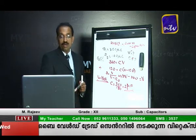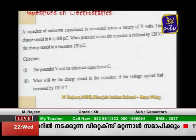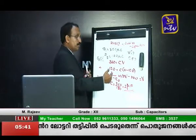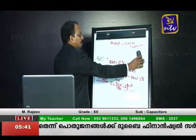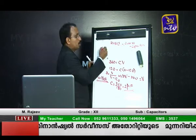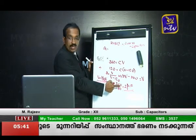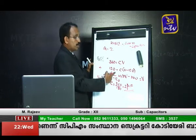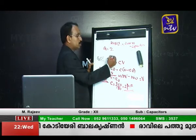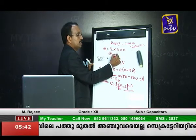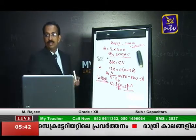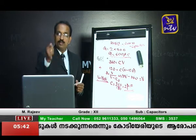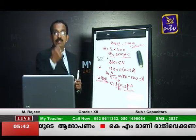The third part of the question asks: what will be the charge stored if the voltage had increased by 120 volts instead of decreased? Using Q = CV again: Q = 2 microfarads × (180 + 120) = 2 × 300 = 600 microcoulombs. We have all three answers now. You can try this question again yourself and check how well you can solve it.